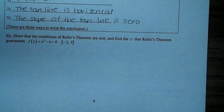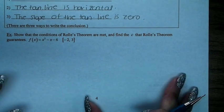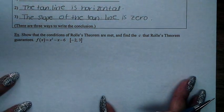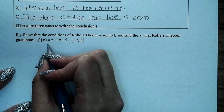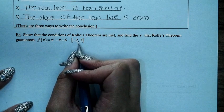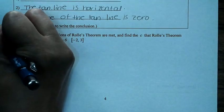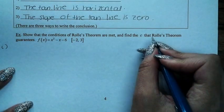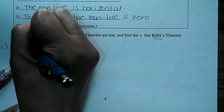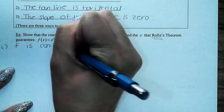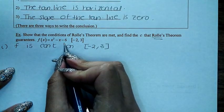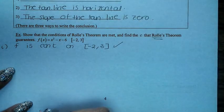Let's look at a problem. We need to show that the conditions of Rolle's theorem are met, and if so, find the c that Rolle's theorem guarantees. We have a quadratic equation f(x) = x squared minus x minus 6 on the interval [-2, 3]. First, you need to make sure you can use Rolle's theorem. The first condition: is this function f continuous on [-2, 3]? A quadratic equation is continuous everywhere, absolutely — it's continuous over any specific interval.